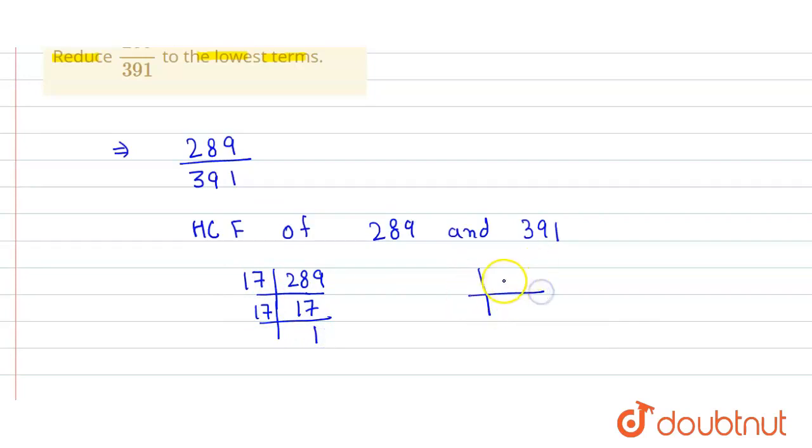Similarly, we find the factors of 391. We divide by 17 and get 23, then divide by 23 and get 1. So 391 equals 17 times 23.